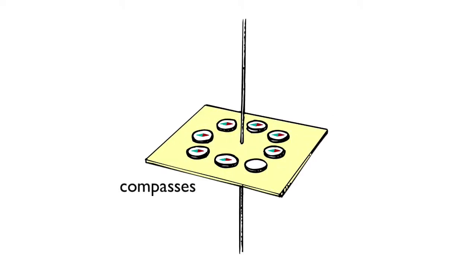The compasses are aligned to Earth's magnetic field. But watch what happens when we pass an electric current through the wire. The compasses now align to the strong magnetic field surrounding the wire.